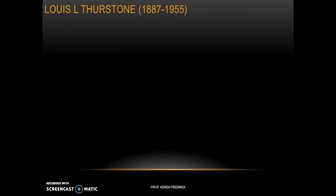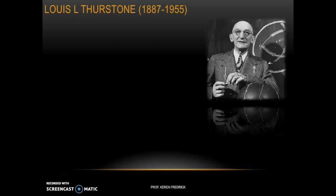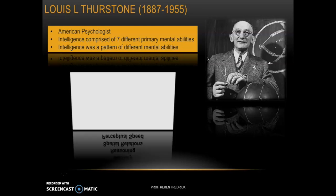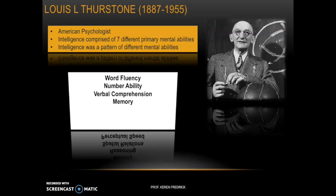The next theory is Lewis L. Thurston's theory. Thurston lived between 1887 and 1955 and was an American psychologist. He believed that intelligence comprised seven different primary mental abilities: word fluency, number ability, verbal comprehension, memory, reasoning, spatial relations, and perceptual speed. He believed that intelligence was a pattern of these different mental abilities, an approach more or less like David Weschler's.